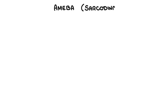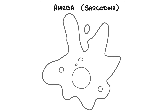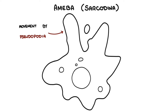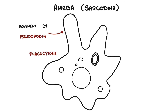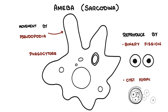Beginning with the amoeba, also known as the sarcodina. These live in freshwater, sea, or moist soil. Movement is by pseudopodia — they extend the cell membrane and allow the cytoplasm to flow into this extension, thus enabling movement. They capture their prey also by pseudopodia through phagocytosis, engulfing things from the outside. Reproduction is by binary fission, and they can also form cysts.